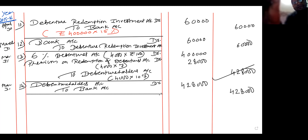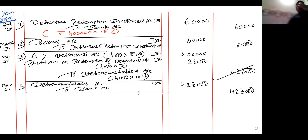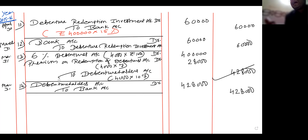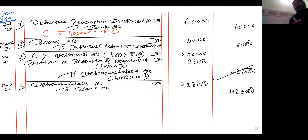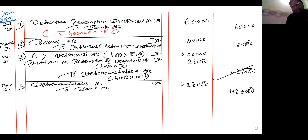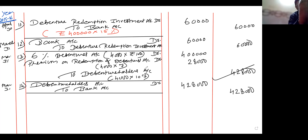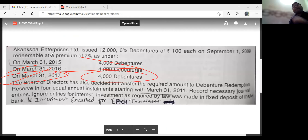After amount paid, what comes next? DRR to general reserve — transfer. But when do you transfer that? Only when full redemption is done. After full redemption of debentures, only then you pass the entry of DRR to general reserve. Full redemption has not happened yet — one more last installment is pending. 31st March 2016 is done, last installment is still pending.